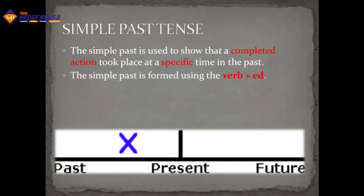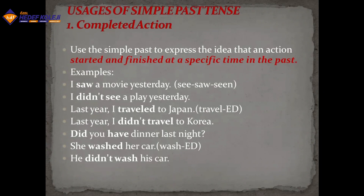The first usage of simple past: completed action. We use simple past to express the idea that an action started and finished at a specific time in the past. For example: 'I saw a movie yesterday.' 'Yesterday' is a specific time, and 'saw' is the second form of 'see'. Another example: 'Last year I traveled to Japan.' 'Last year' is a specific time, and 'traveled' is regular so we add '-ed'.